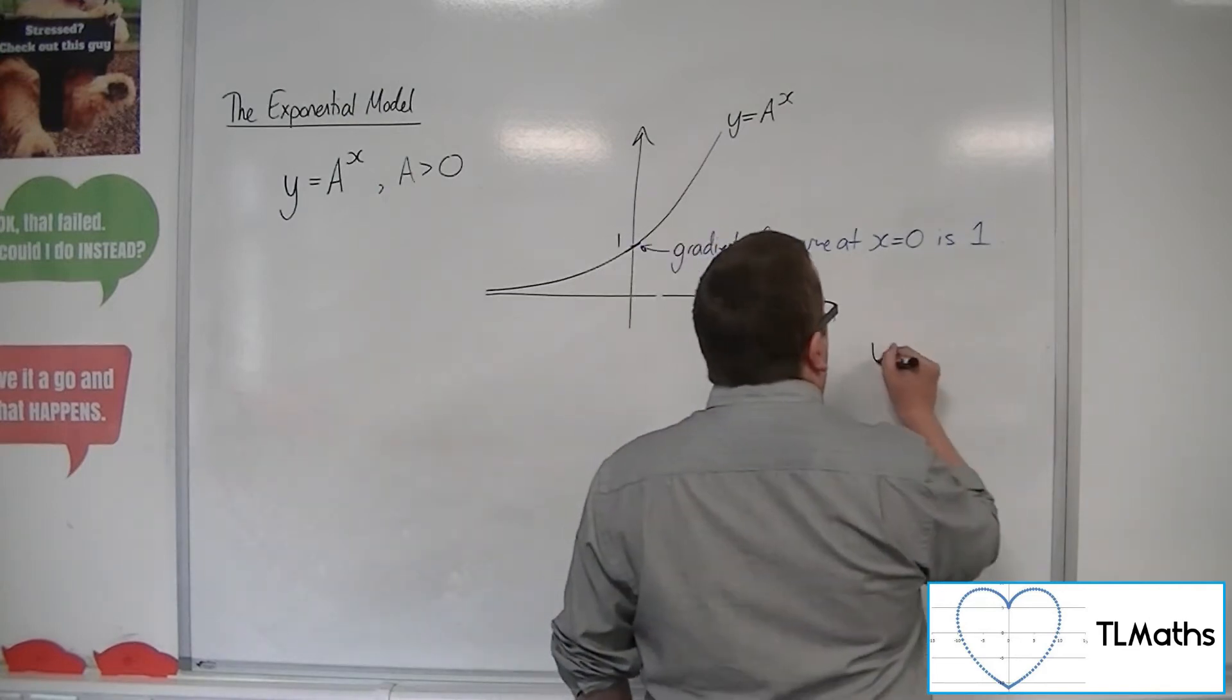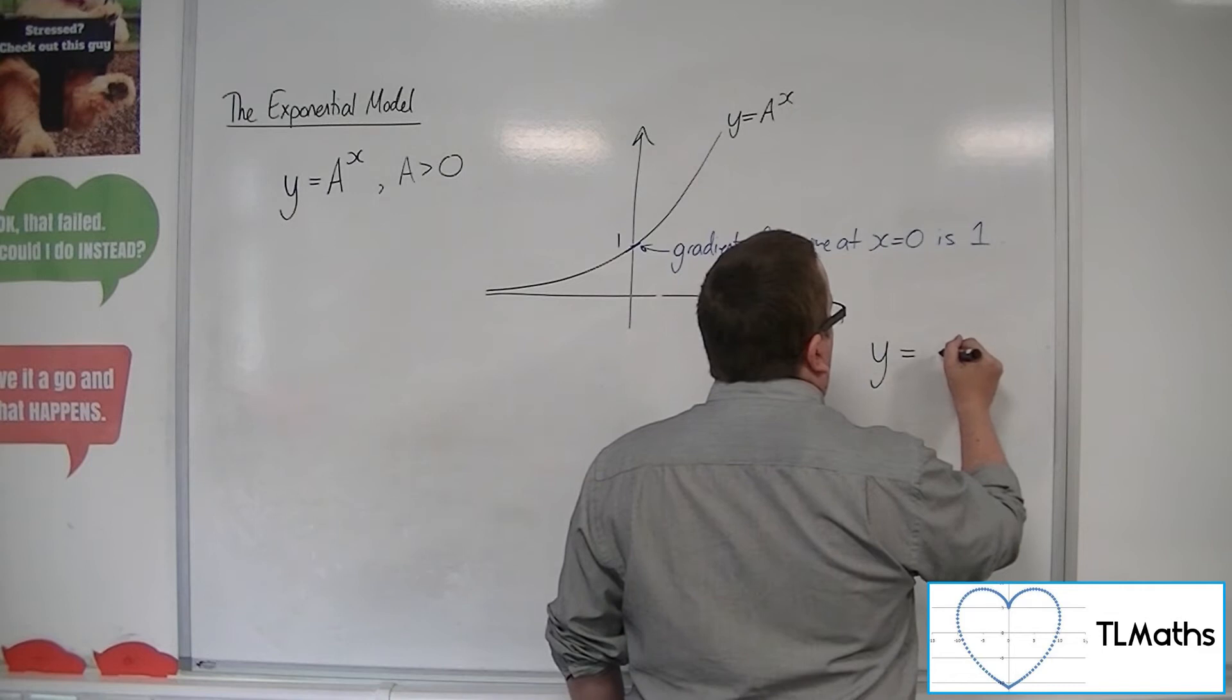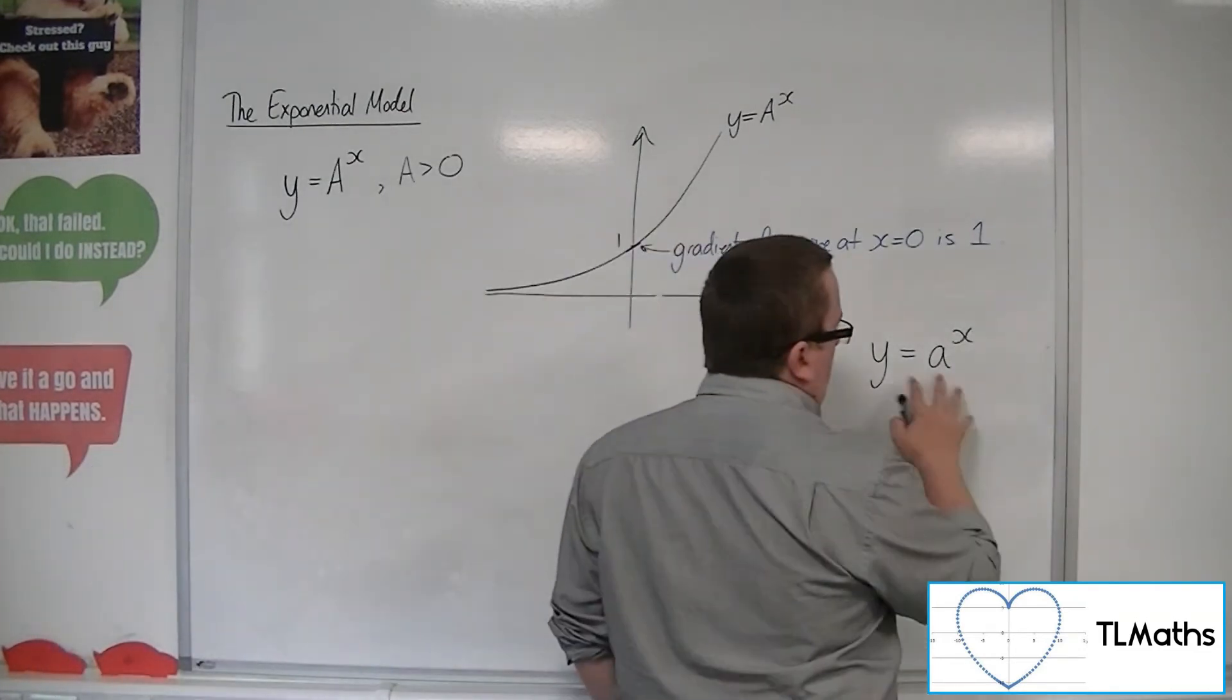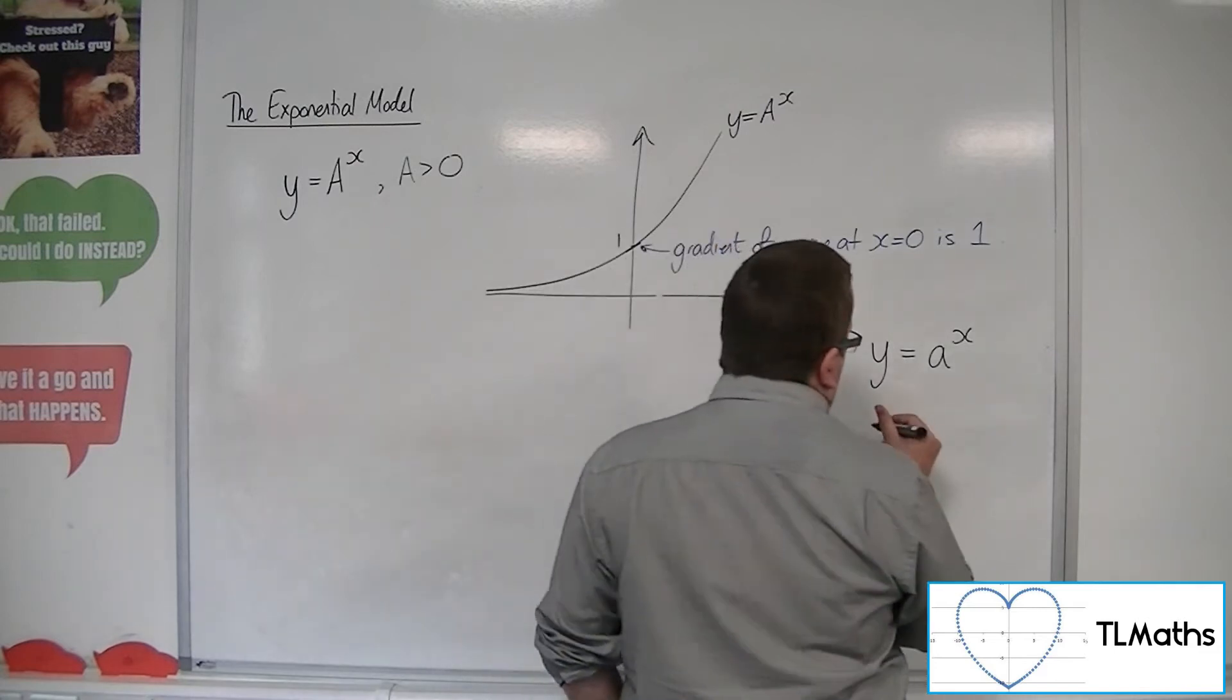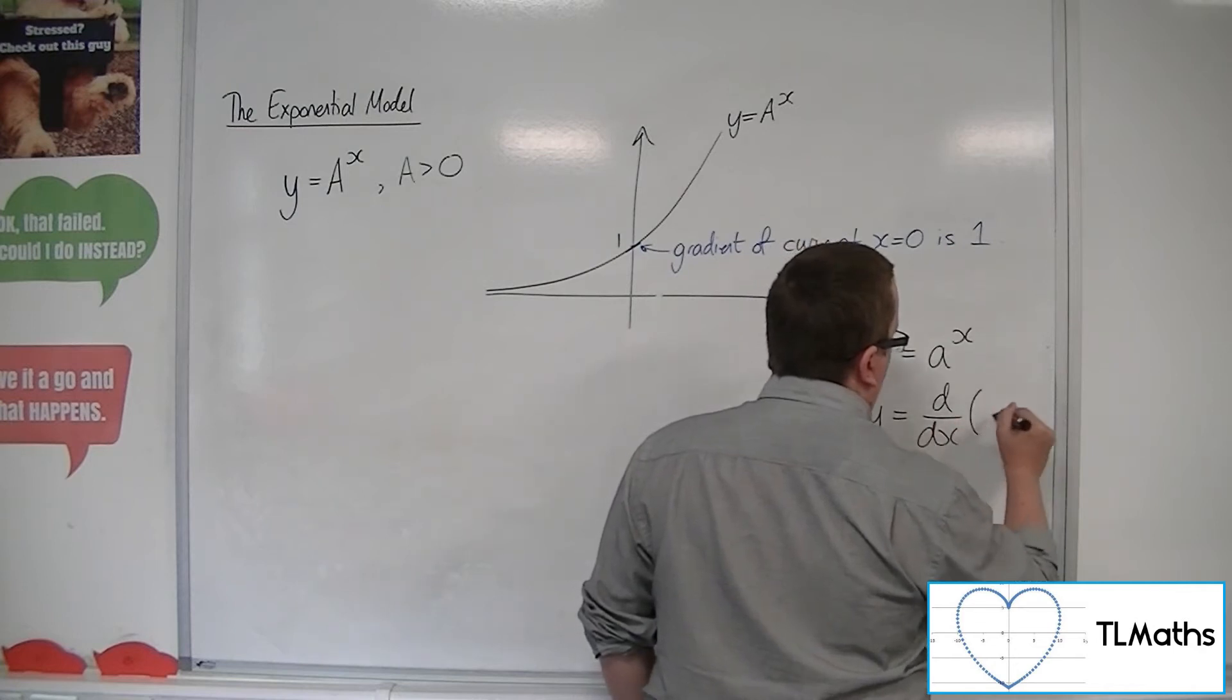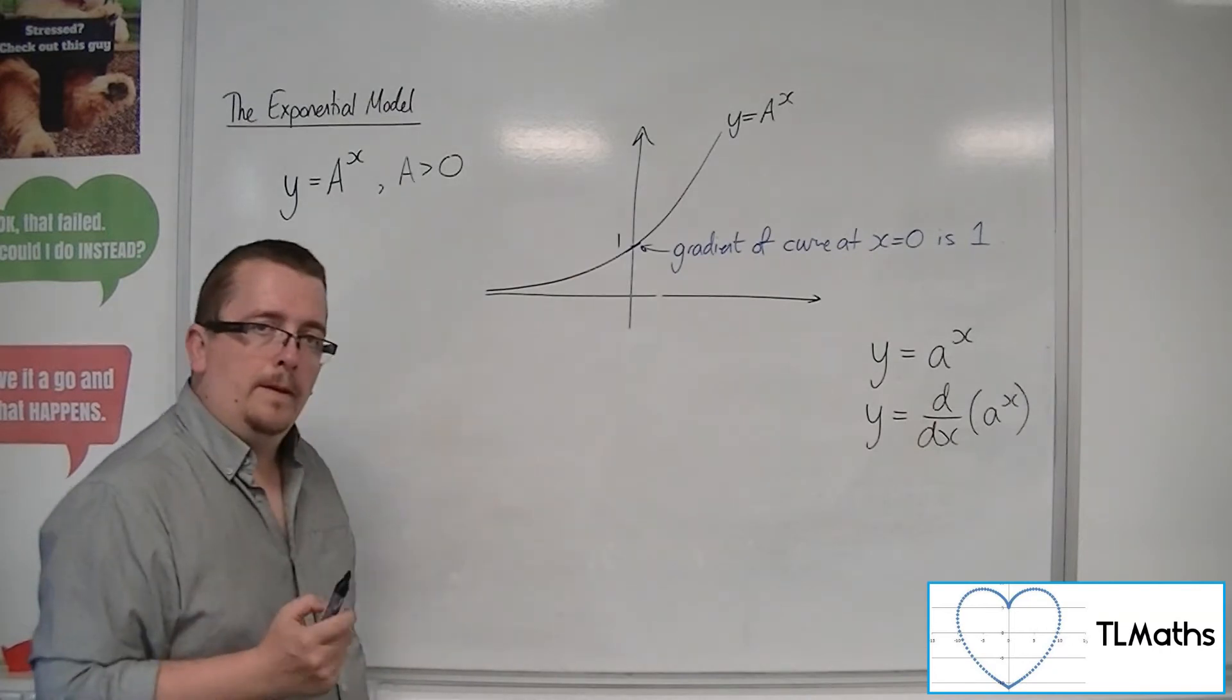So if you typed in a to the x as one function, it'll say would you like to add a slider? It'll say yes. And the other function, what you want is this. You want to type that in.